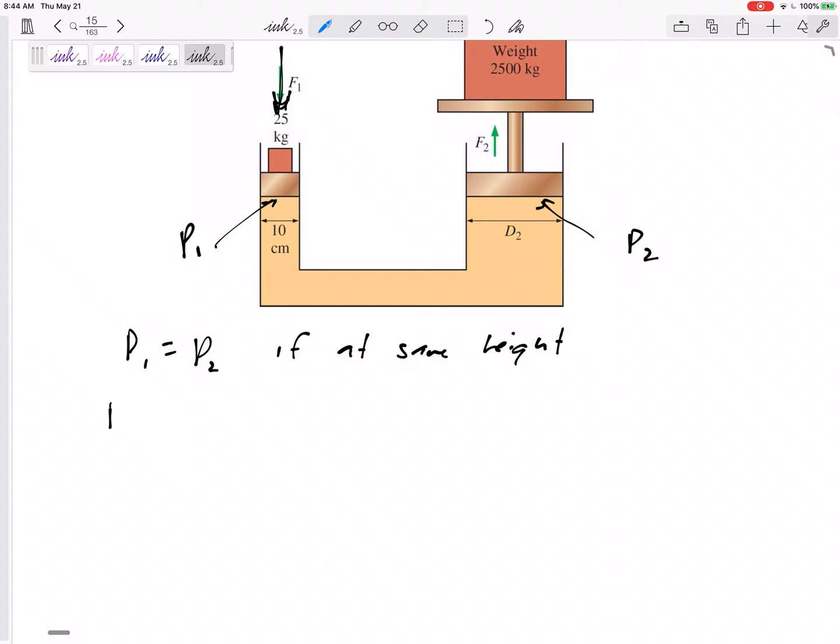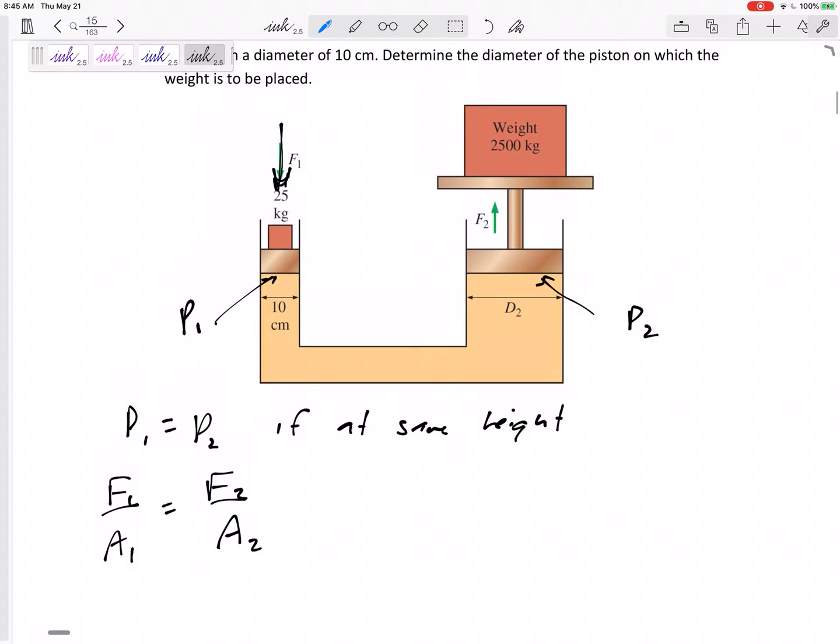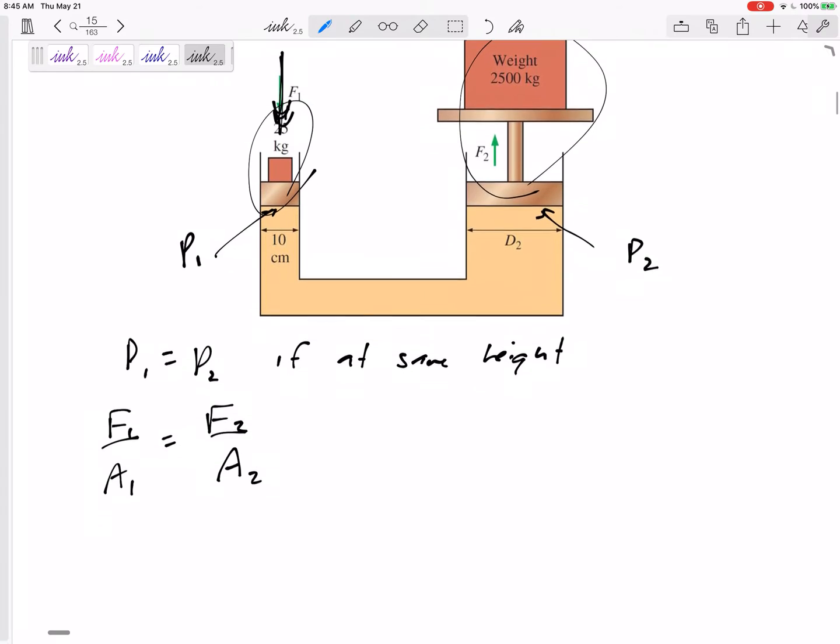Pressure is force per area, so here we could say F1 over area 1 equals F2 over area 2. That's how hydraulic pistons work, and you can push down with a small force and lift a larger force.